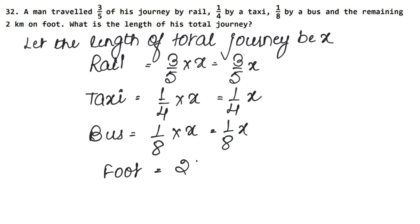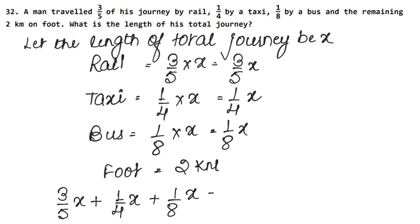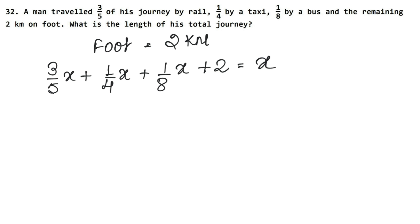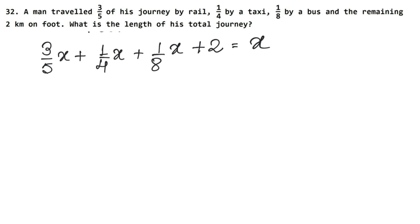Two kilometers on foot. Now we have known all these values. If we add all these values, our total journey will equal x. So: three upon five x plus one upon four x plus one upon eight x plus two equals x. Five, four, and eight have something in common — we take the LCM of 5, 4, and 8.